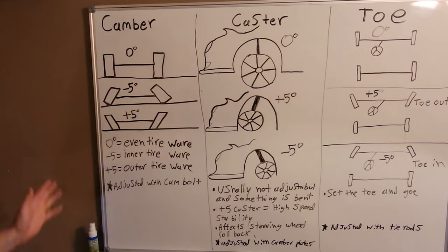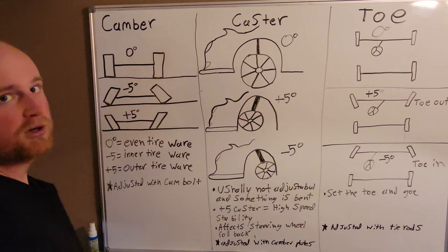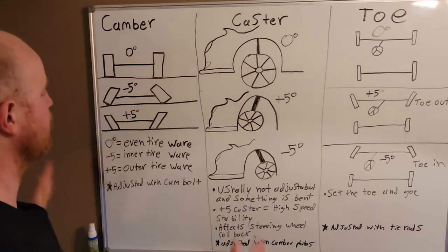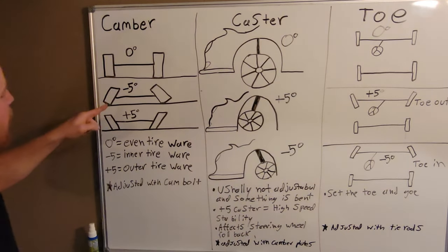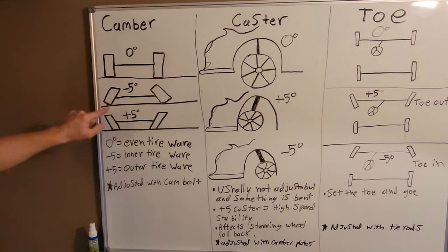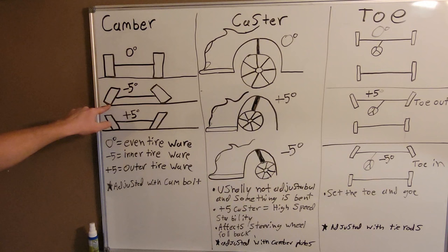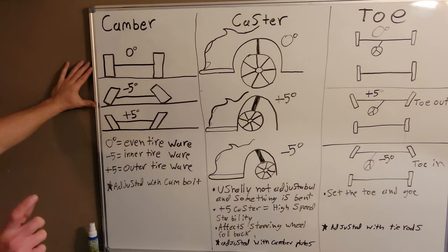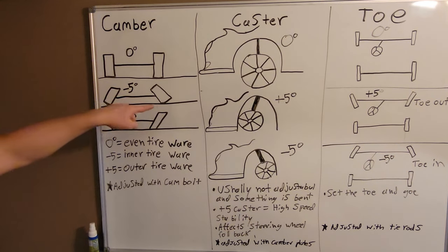Now here's negative camber. You'll see that in tuner cars. They think it's cool when they put all, I mean that's very excessive. This is the inside of the tire and that's the outside. You're going to have inner tire wear with negative camber. On race cars, if you only use a little bit of negative camber, it'll provide better handling when you're going around the turn.